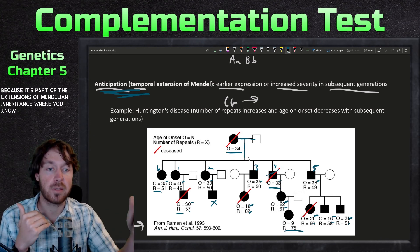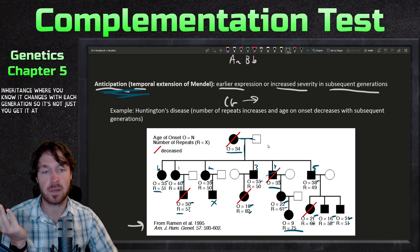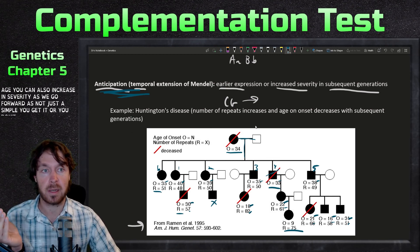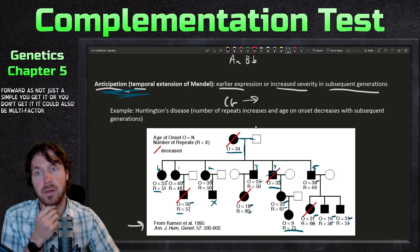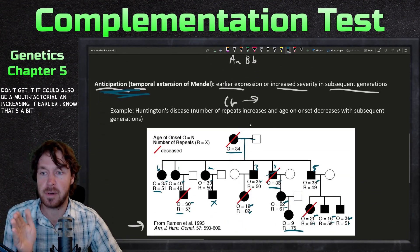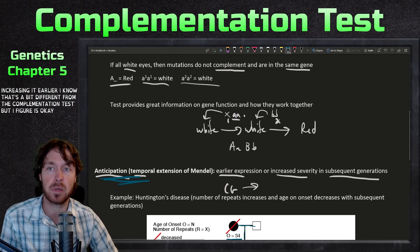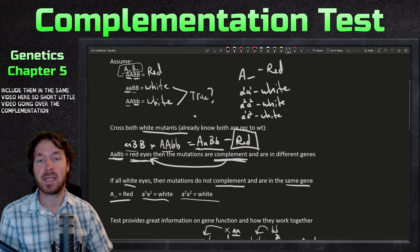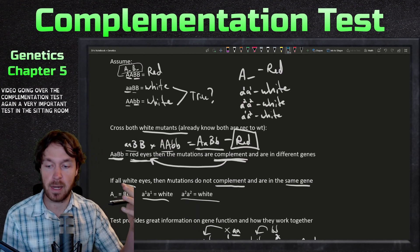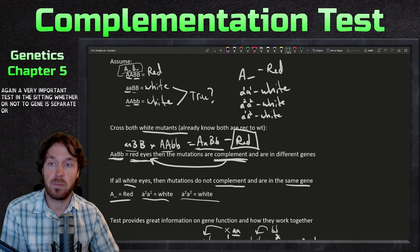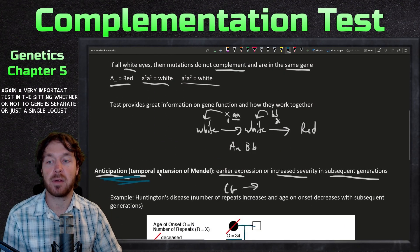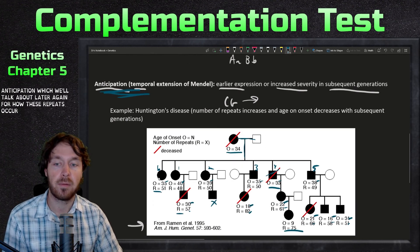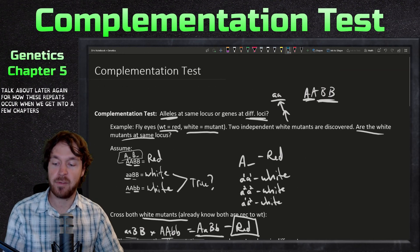Anticipation is included in this chapter because it's part of the extensions of Mendelian inheritance — it changes with each generation, so it's not just a matter of getting the disease at a fixed age. It can increase in severity and occur earlier. It's not a simple you-get-it-or-you-don't situation; it can be multifactorial and increasingly earlier. So we covered the complementation test and anticipation today.